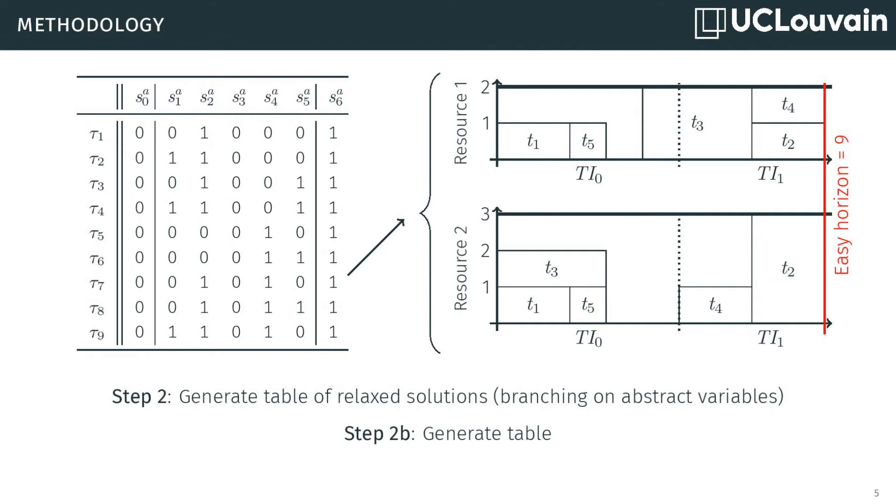The second part is the generation of the relaxed table. This is done by adding the new variables. Channeling constraints are used to link them to the initial start variables. The search space is then explored by branching only on the abstract variables. All the solutions are gathered in the table. Each of these tuples corresponds to a relaxed solution, as the one displayed where the starts of each task have been relaxed.